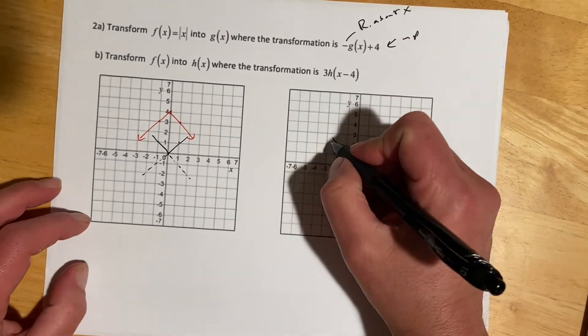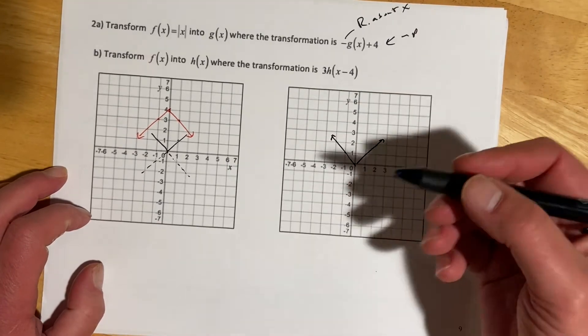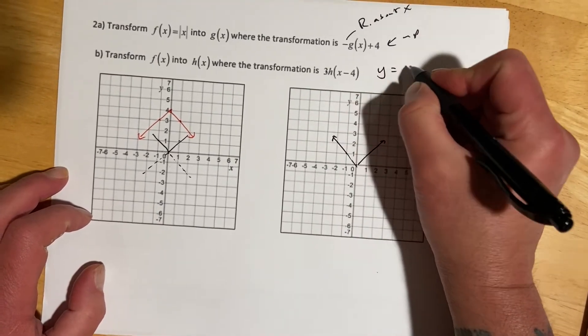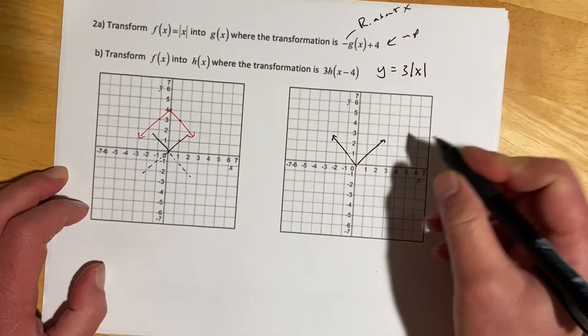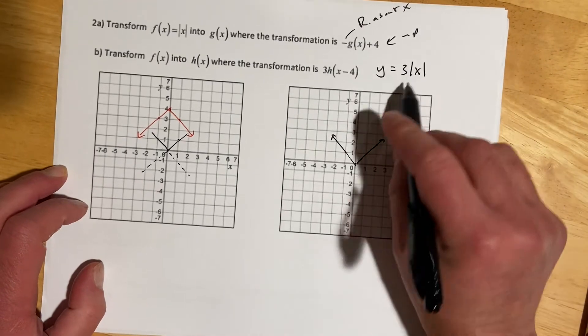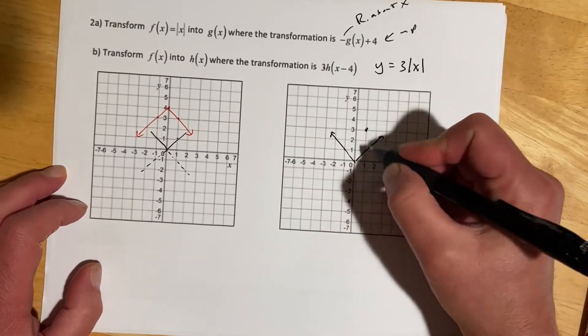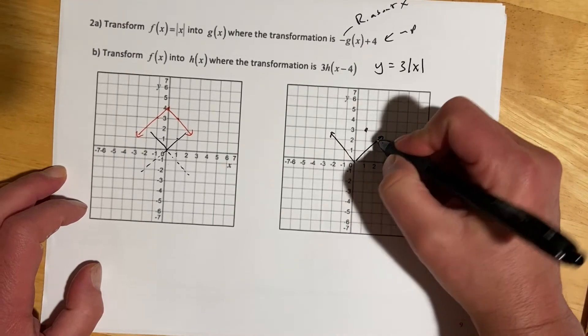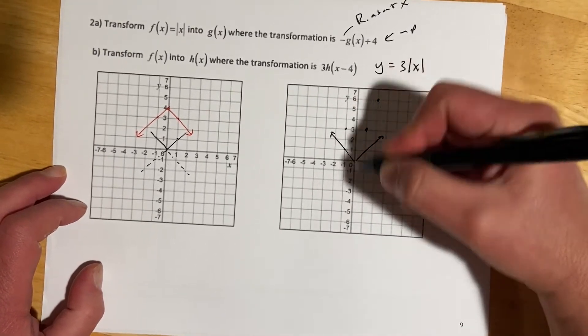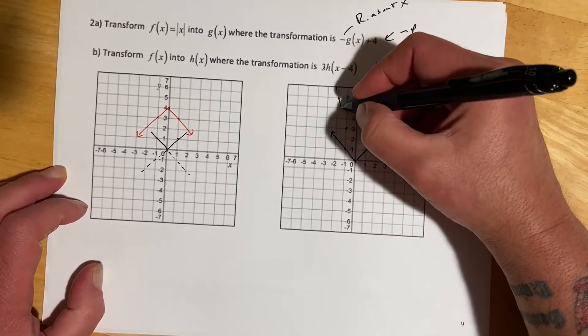If I do a stretch on this, the 3 multiplies all of our y values. Without the 3, if I put in 1, I would get 1. But now when I have a 3 in front, when I put in 1, I get out 3. When I put in 2, instead of getting 2, I get 3 times as much, I get 6. That's the vertical stretch from the last section.